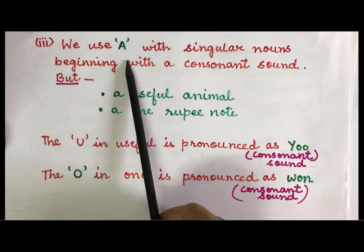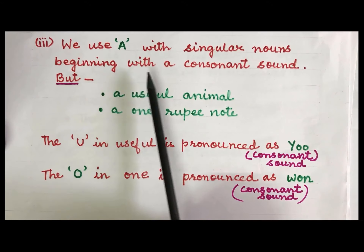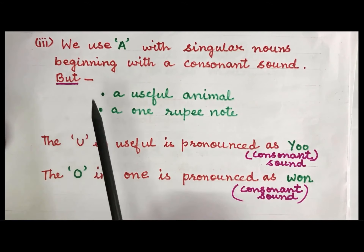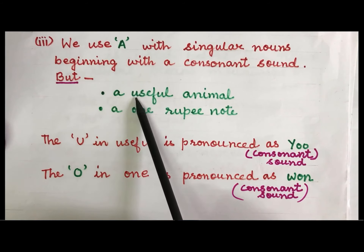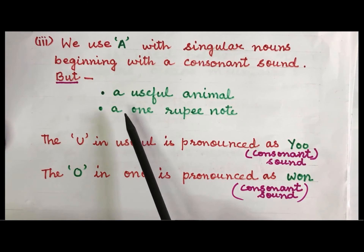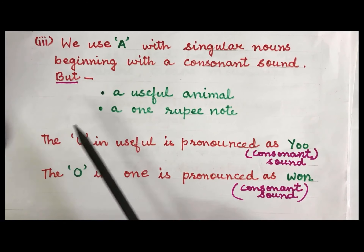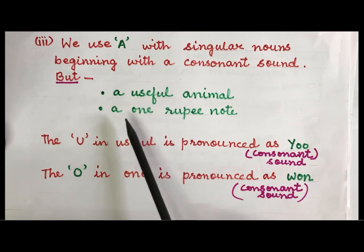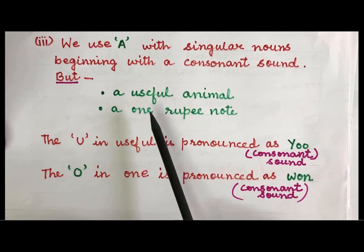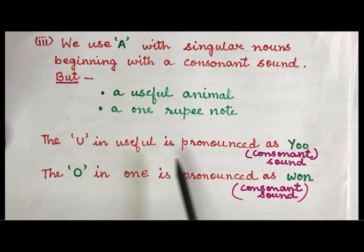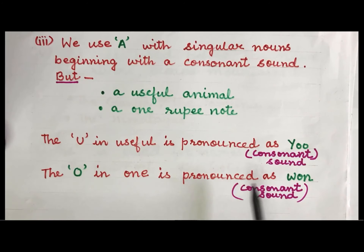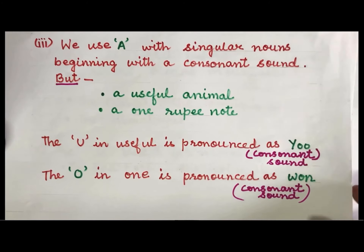We use a with singular nouns beginning with a consonant sound, but also in cases like: a useful animal, a one rupee note. You can see the vowels u and o here, but when we pronounce these words — useful sounds like 'yooseful' and one sounds like 'wun' — they have a consonant sound, so we write the article a.